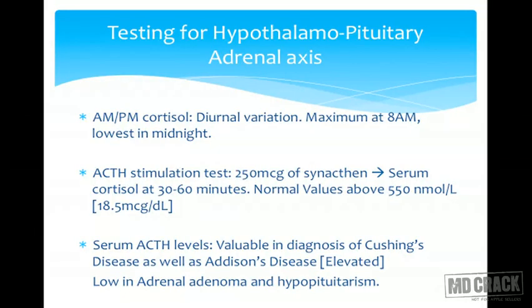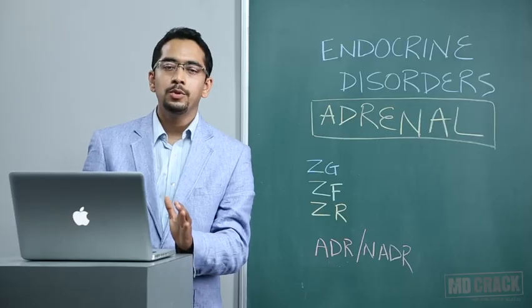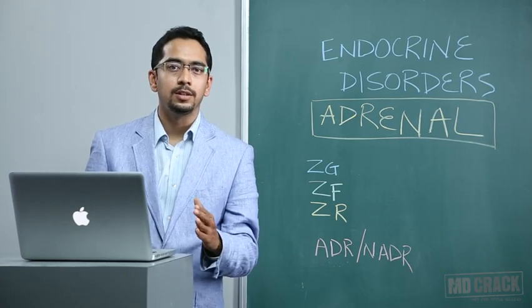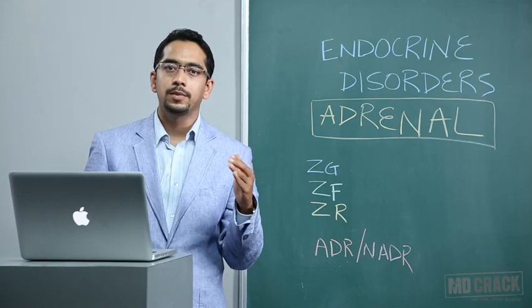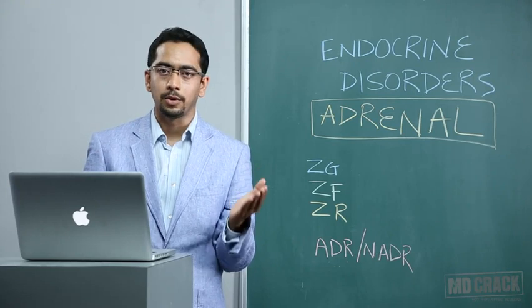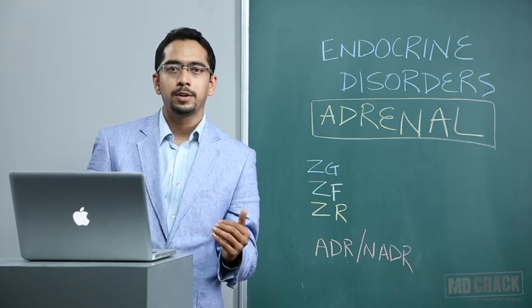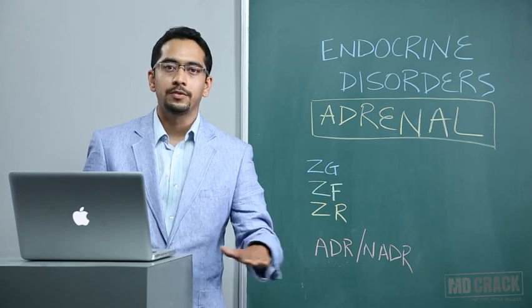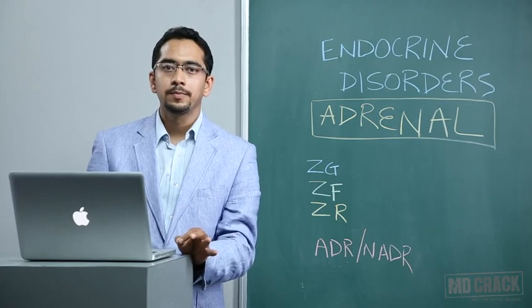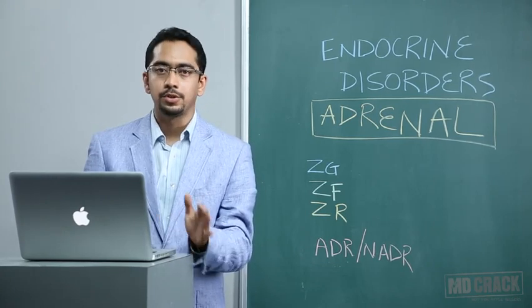The first step is looking at the AM-PM variability in the cortisol level — in short, the diurnal variation. In most adrenal disorders, be it Cushing's syndrome or Addison's disease, the diurnal variation is lost. Normally at 8 AM, cortisol is at its peak because of high ACTH values in the morning, and around 11 PM there is a trough in cortisol secretion. This loss of diurnal variation is the first step in diagnosing Cushing's disease or Cushing's syndrome.